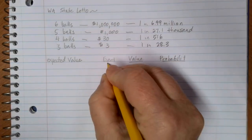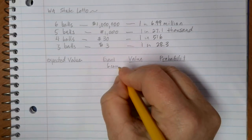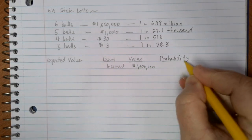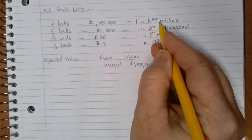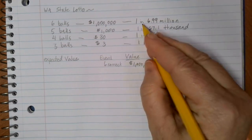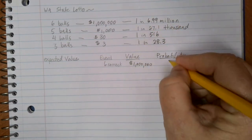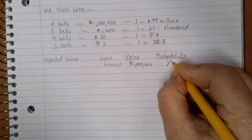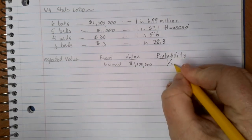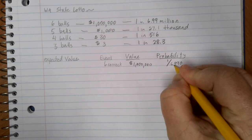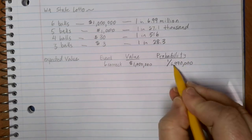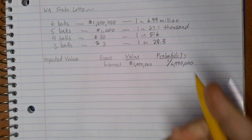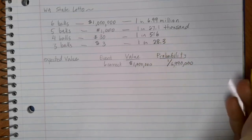So if we get all six balls correct, the value is $1 million, and the probability is going to come from these odds. Odds are just another way that we can talk about a probability chance. If we have 1 in 6.99 million possibility, then our probability is 1 out of 6.99 million. 6.9 million can be written out like this: 6 million with the 990,000 coming next. And we'll need to make sure that we have all of those zeros in their appropriate places.